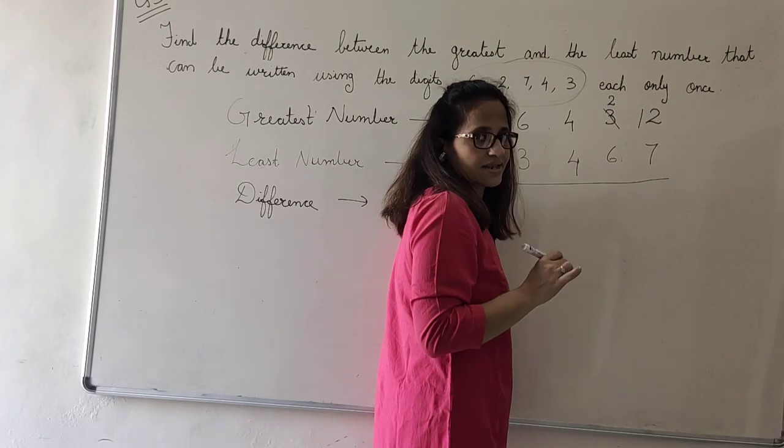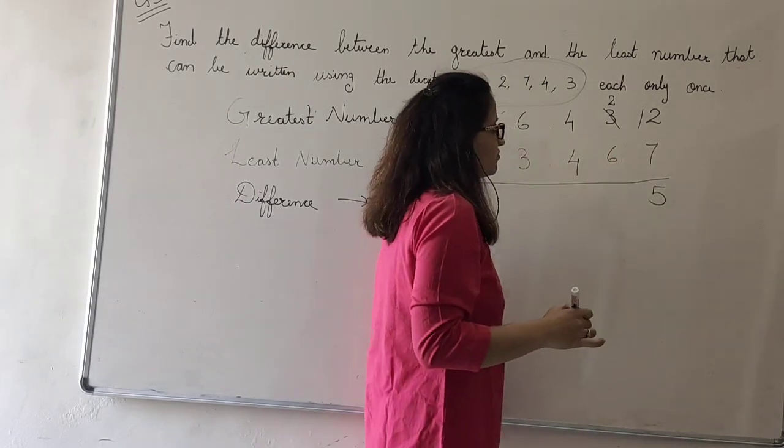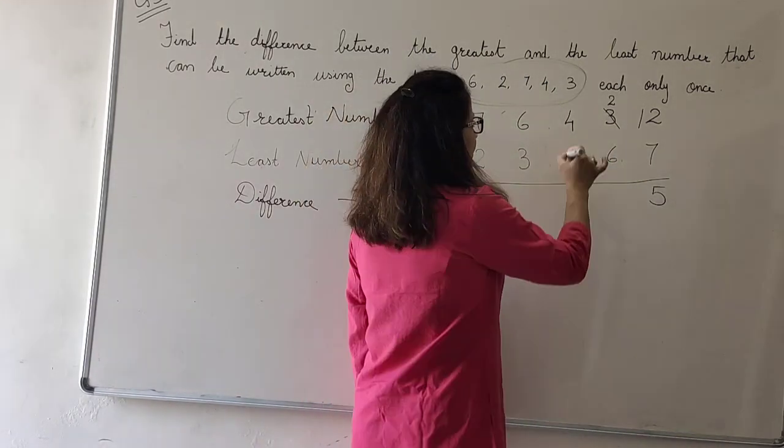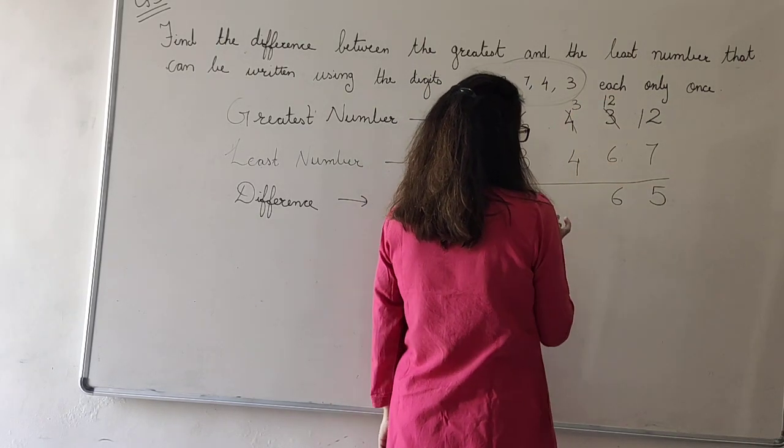Now, 12 minus 7, it will become 5. I cannot subtract 6 from 2. Again, I will borrow from the neighbor. 12 minus 6 will be 6.